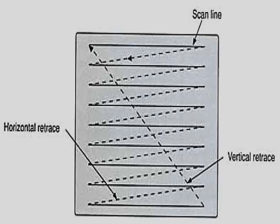This figure shows how a raster scan system works. The return of the beam to the left of the screen after refreshing each scan line is called horizontal retrace. At the end of each frame, the electron beam returns to the top-left corner of the screen to begin the next frame; this is called vertical retrace. The horizontal lines represent the scan lines.